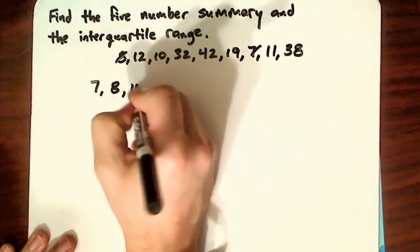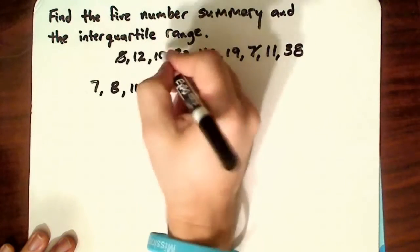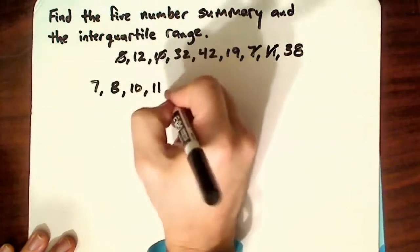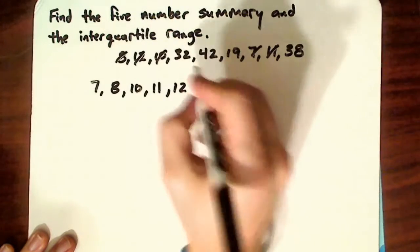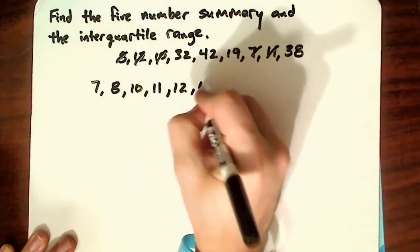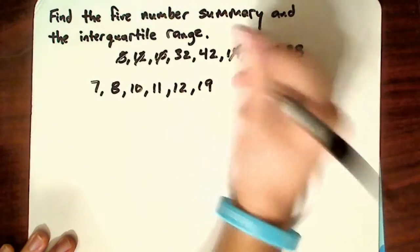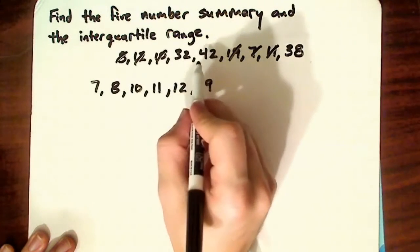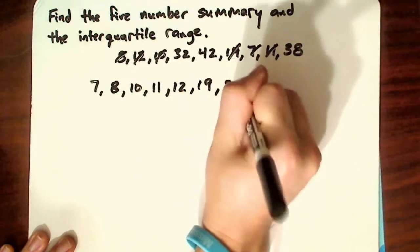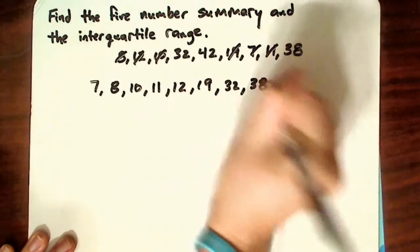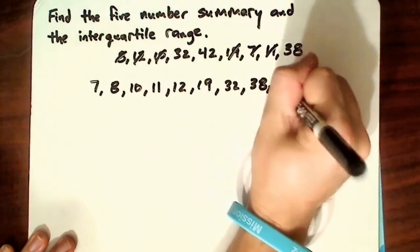So that would be 10, 11, 12, 12, next one would be 19, 32, 38, and 42.